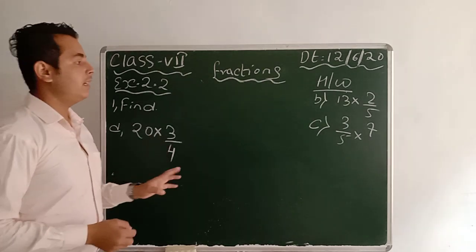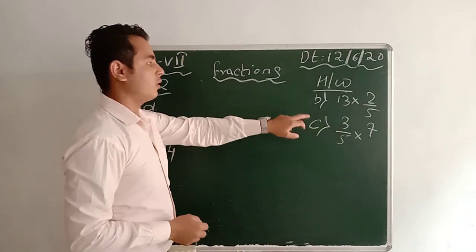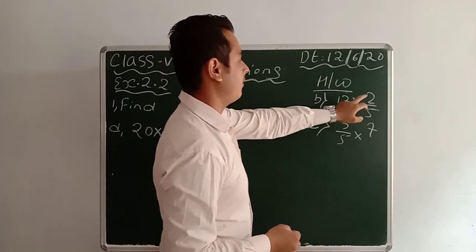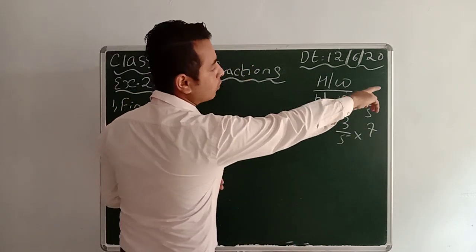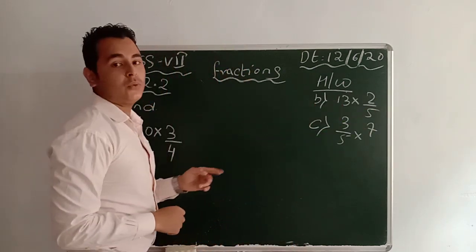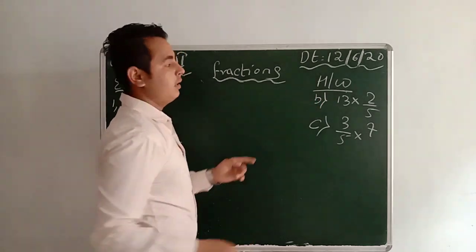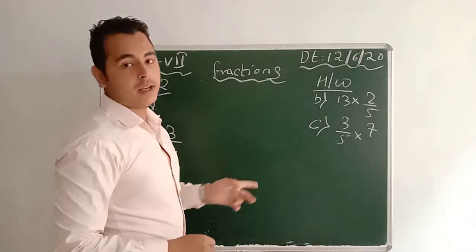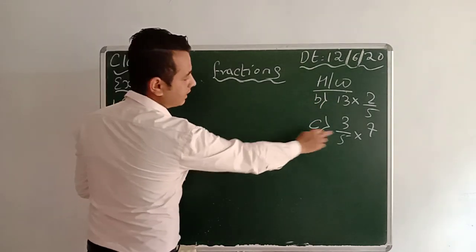Okay, A I did. B and C is your homework. Next: 13 into 2/5. First of all, multiply 13 into 2 which gives you 26. So 26/5 equals 5 and 1/5. Similarly, do C also.